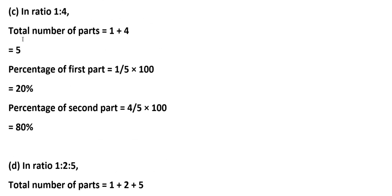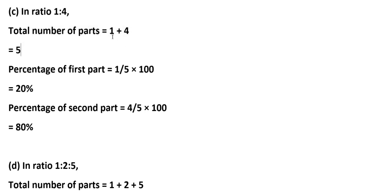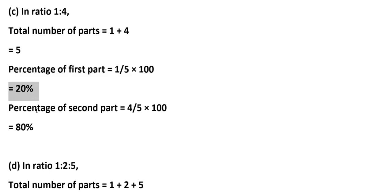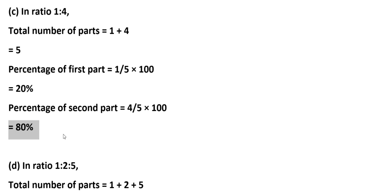In ratio 1:4, total number of parts = 1+4 = 5. Percentage of the first part = (1÷5)×100 = 20%. Percentage of the second part = (4÷5)×100 = 80%.